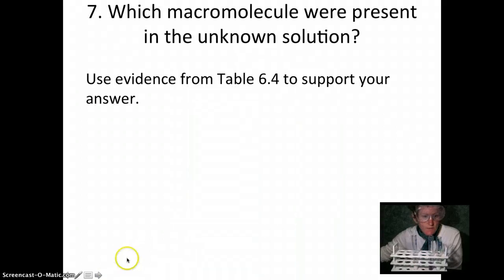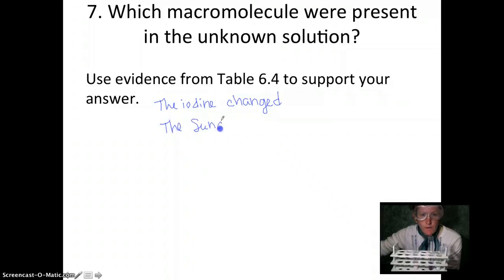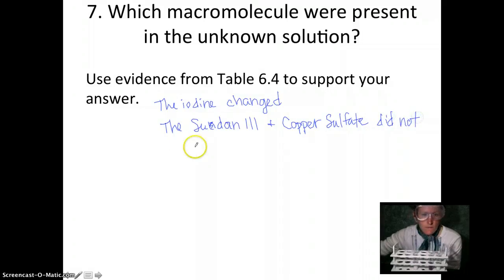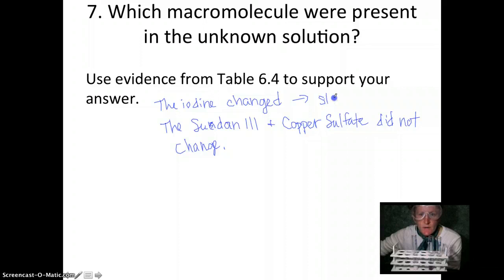Question 7 is which macromolecules were present in the unknown. Remember, in the unknown only the iodine changed color. So we can use that as evidence. The iodine changed to dark purple. The Sudan 3 and copper sulfate did not change. You should be writing full sentences. The iodine changing indicates there was starch in the unknown.